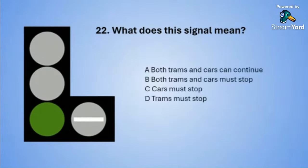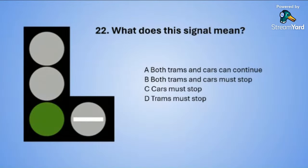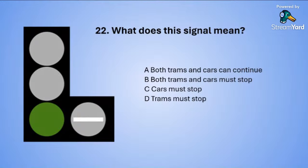Question twenty-two: What does this signal mean? A: both trams and cars can continue. B: both trams and cars must stop. C: cars must stop. Or D: trams must stop. The correct answer is D — trams must stop.